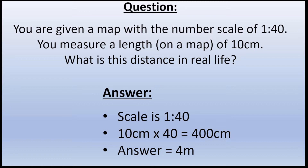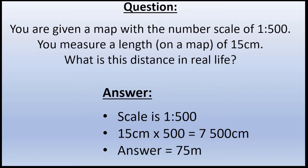Let's take another example. You are given a map with a number scale of 1 to 40. You measure a length on the map of 10 centimeters — what is the distance in real life? We take our distance on the map, 10 centimeters, and multiply by our scale of 40, giving us 400 centimeters. We then convert that into meters, and that gives us an answer of 4 meters.